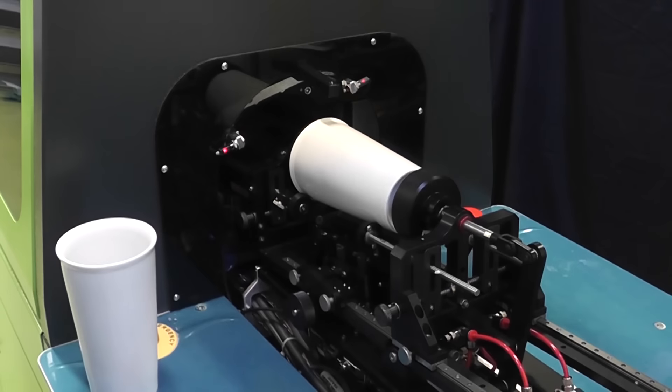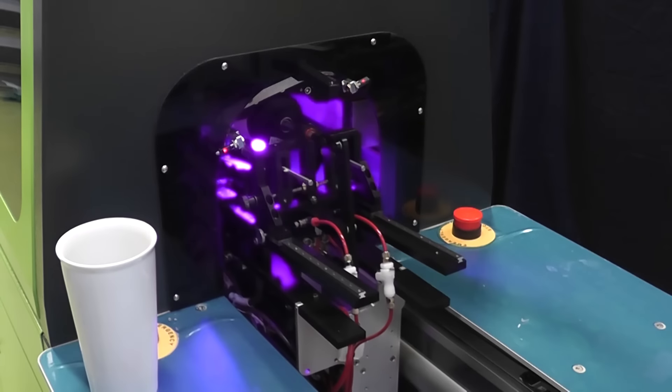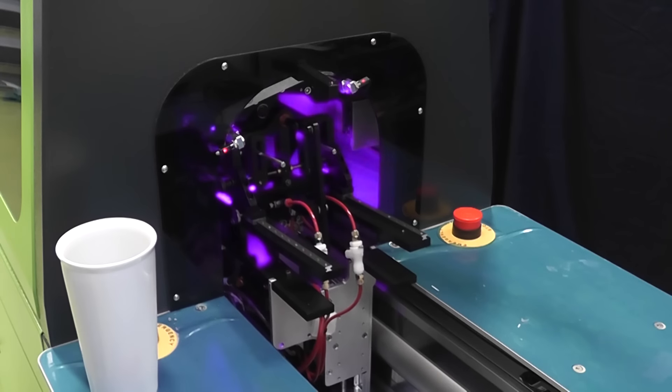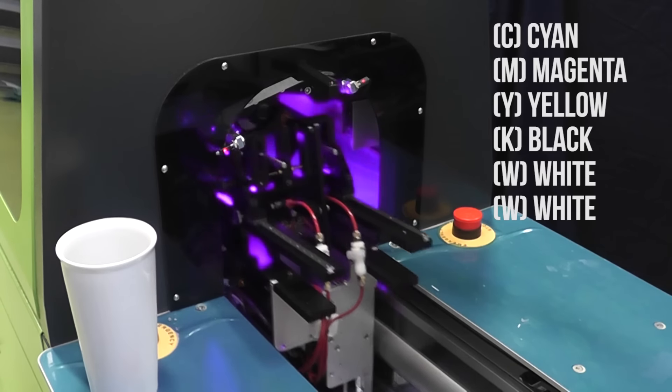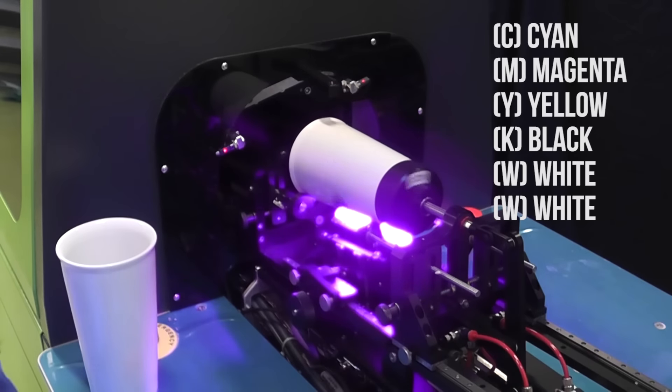The specialized helical design of the printhead, of which the name of the machine is derived, is capable of printing CMYK and white on an average of 4 cylinders per minute.